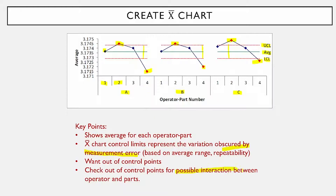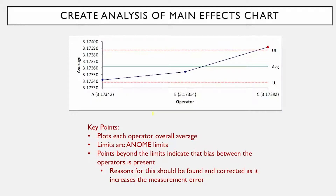That could be because there's a possible interaction between the operators and parts that needs to be evaluated. From there, you create an analysis of main effects chart. What you're doing here is plotting the overall average for each operator and looking for any biases between the operators. The limits in this case are analysis of main effects limits, but you interpret them pretty much the same way. If you have points beyond the limits, it indicates there's a bias between the operators. In this example, operator C is out of the limits and operators A and B are within, so there appears to be a difference. We need to find that reason and correct it because it will increase the measurement error.